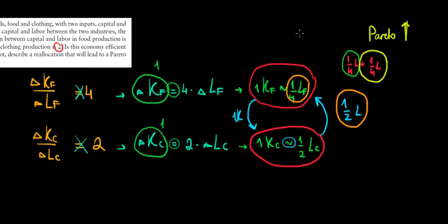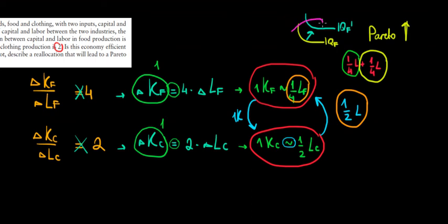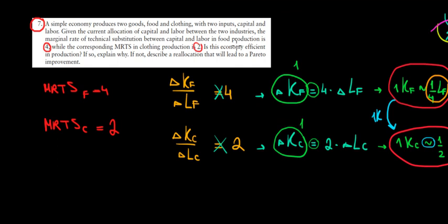The isoquant of the food company moves to a higher level without hurting the clothing company, because the clothing company still gets its unit of capital in exchange for the 1/2 unit of labor it was willing to give. The clothing company maintains the same production level while the food company is better off. Being better off without hurting anyone is a Pareto improvement — and that's what we had to describe. Hope this makes sense. We are done.